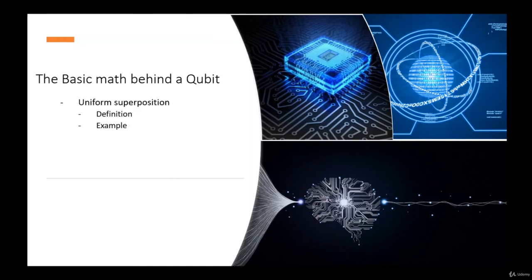Another state that is really important to understand especially in quantum computing is called the uniform superposition. What is it exactly? It's a state where the probability of collapsing the state vector with any of the basis vectors will be the same — that is, all the basis vectors have the same amplitude. This is why we call this state a uniform superposition.